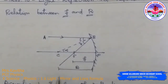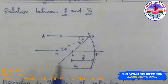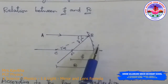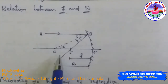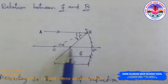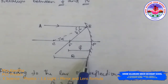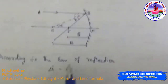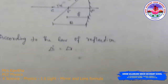Consider a ray AB which is parallel to the principal axis, incident at point B of a concave mirror. After reflection it passes through the focus. C is the centre of curvature, CP is the radius of curvature R, and BC is the normal to the mirror at point B.